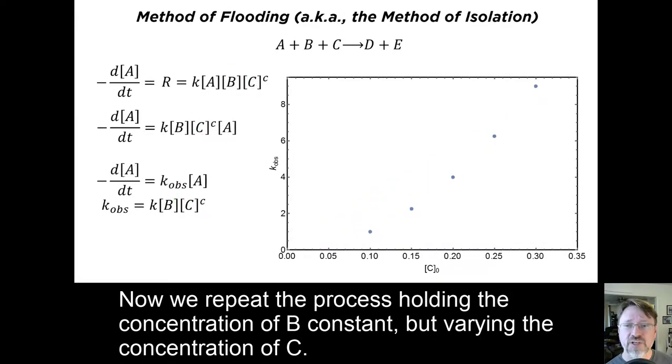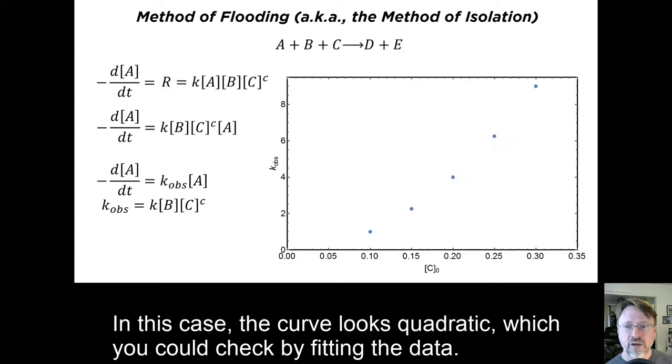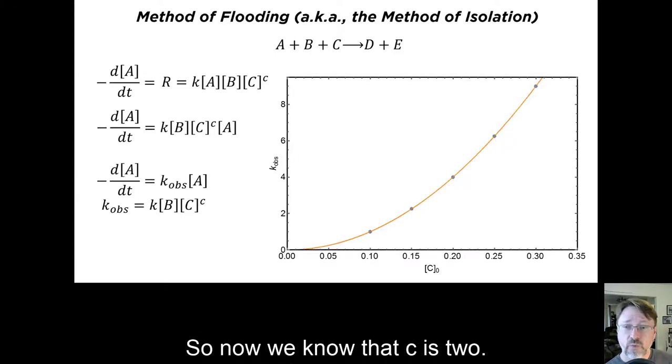Now we repeat the process, holding the concentration of B constant, but varying the concentration of C. In this case, the curve looks quadratic, which you can check by fitting the data. So now we know that C is 2.